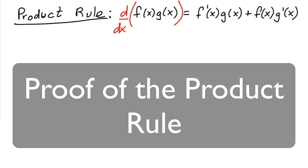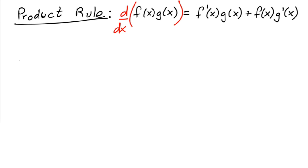Alright, so to prove the product rule, what we want to do is use the definition of the derivative. So the derivative of f(x) times g(x) is going to equal the limit as h approaches 0